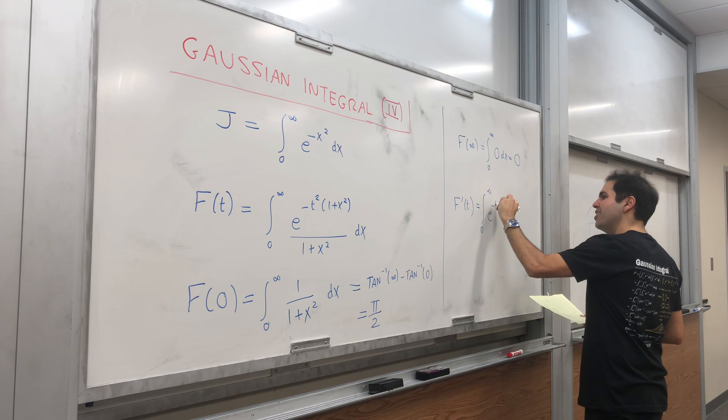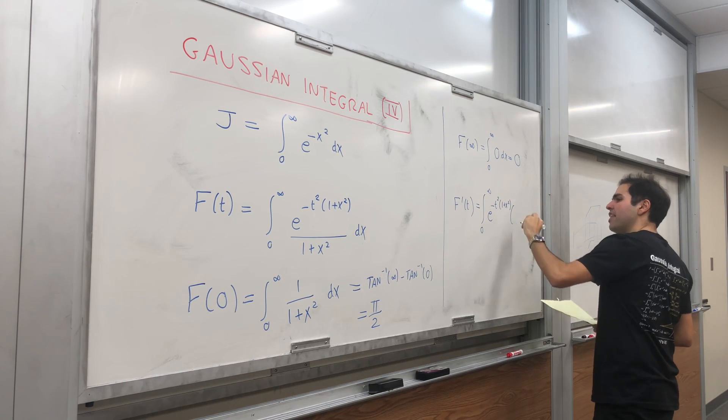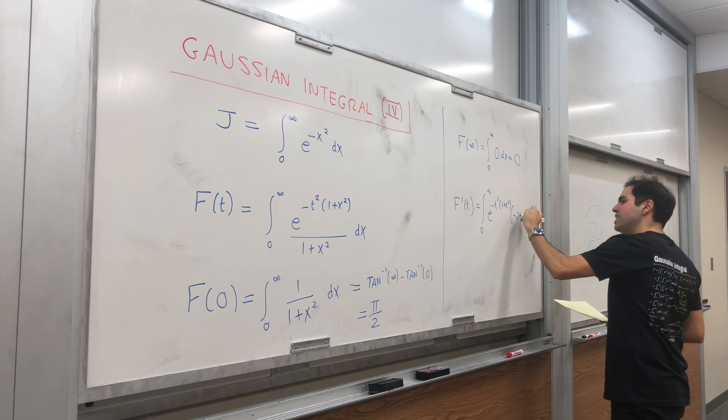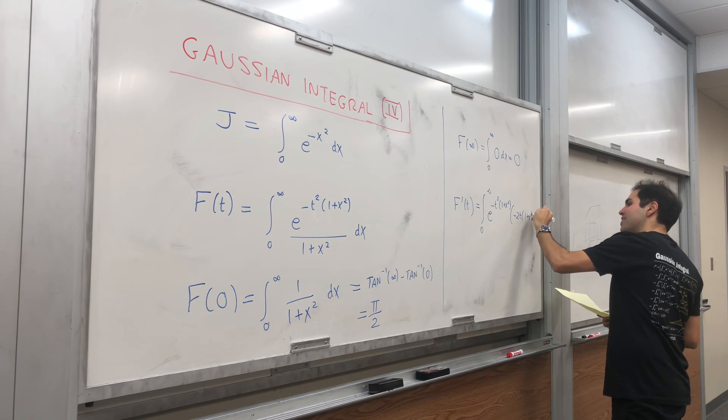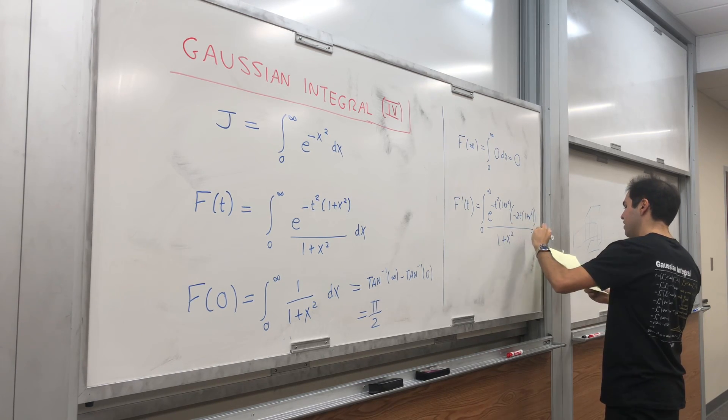Let's differentiate that using the chain rule. So we get e of negative t squared times one plus x squared, and then minus two t times one plus x squared, over one plus x squared dx.